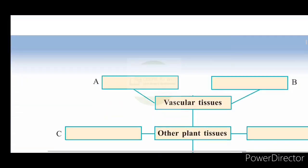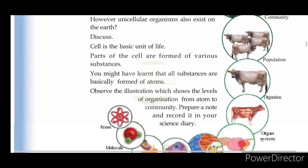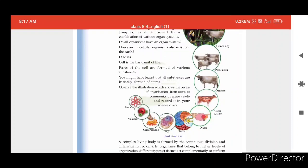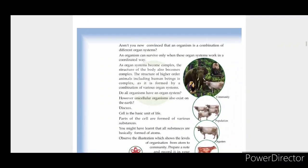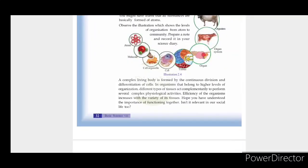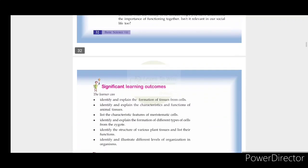Let us look at the levels of organization: cell, tissues, organ, organ system, organism, population, and community. We have now covered all types of plant and animal tissues, their functions, how stem cells develop through cell differentiation, and vascular tissues. This concludes our lesson.